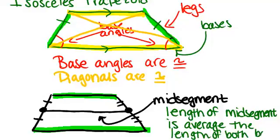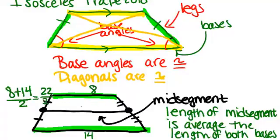This works whether or not the trapezoid is isosceles. For example, if the top base is 8 and the bottom base is 14, the mid-segment length would be (8 + 14) ÷ 2. Since 8 + 14 = 22, and 22 ÷ 2 = 11, the mid-segment length is 11.